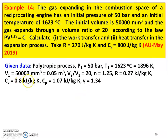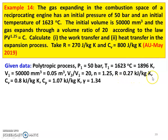This is a polytropic process. Given data: P1 = 50 bar, T1 = 1623°C = 1896 K, V1 = 50,000 mm³ = 0.05 m³, volume ratio V2/V1 = 20, polytropic index N = 1.25, R = 0.27 kJ/kg·K, CV = 0.8 kJ/kg·K. Cp = R + CV = 1.07 kJ/kg·K. Gamma = Cp/CV = 1.34.